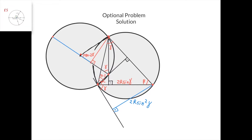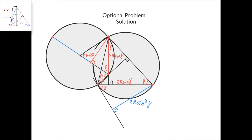We know that these two sides equal the radius of the circle, so this is an isosceles triangle. And because this angle is 180 minus 2 gamma, then this angle must be gamma, and this angle here must be gamma. We know that this length is the distance between the orthocenter and this vertex of the triangle, and so it equals 2r cosine of gamma. Now in this triangle, we have that this is a hypotenuse, 2r cosine of gamma, and this angle is gamma. Therefore, this side equals 2r cosine of gamma times cosine of gamma, or 2r cosine squared of gamma.